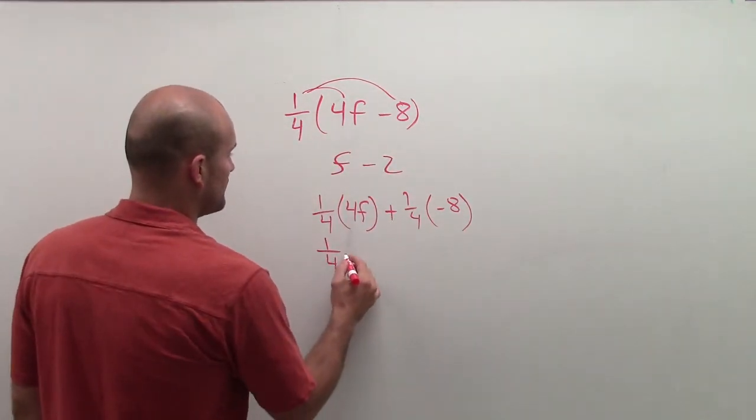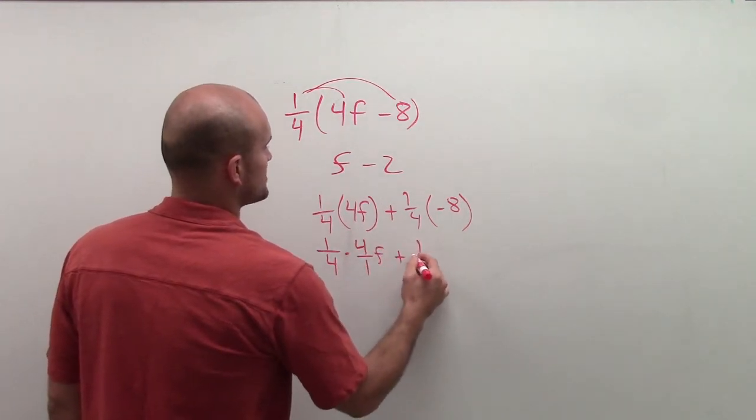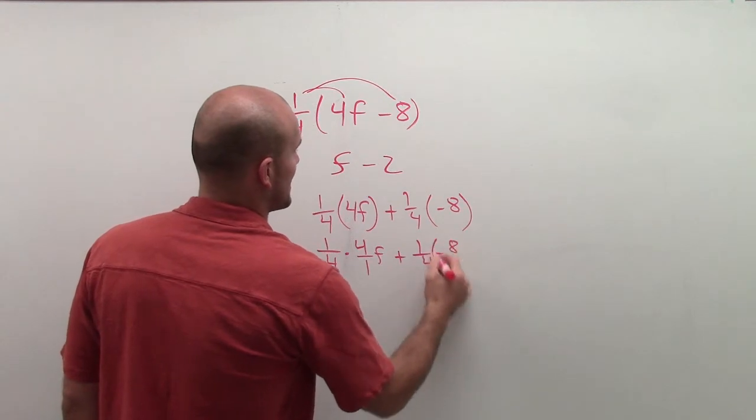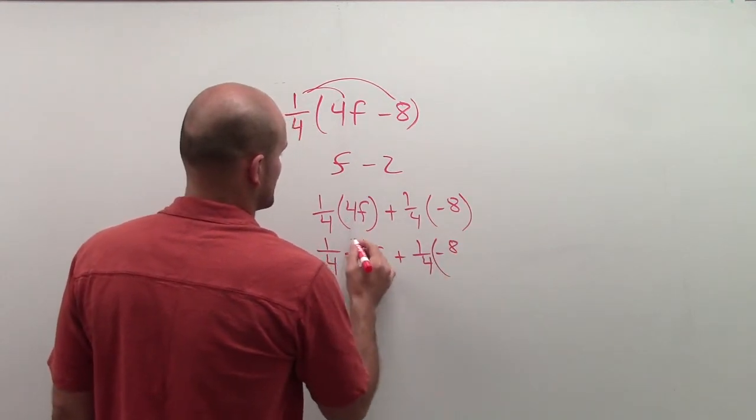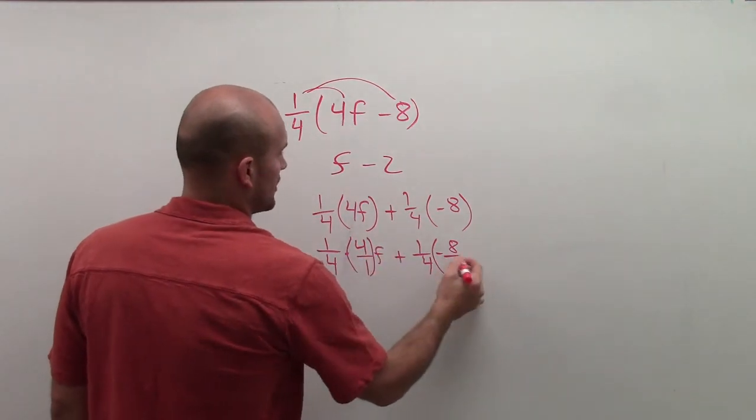So I can write this as 1 fourth times 4 over 1f plus 1 fourth times negative 8, let's put this in parentheses too, over 1.